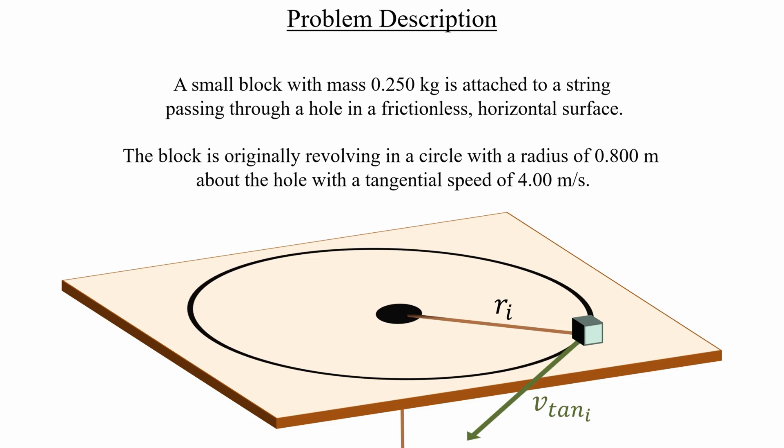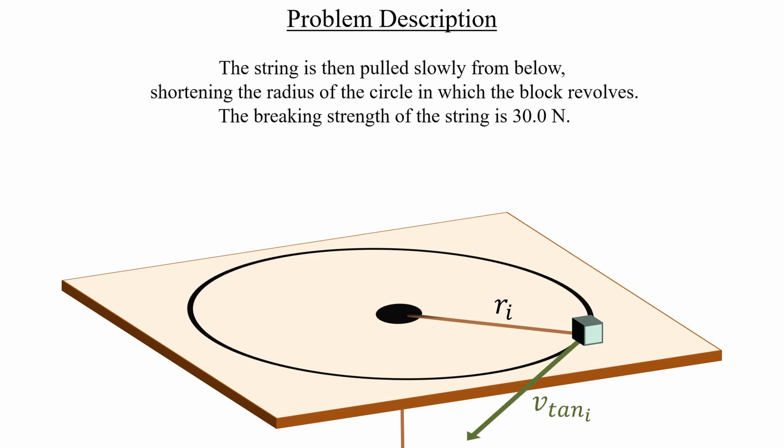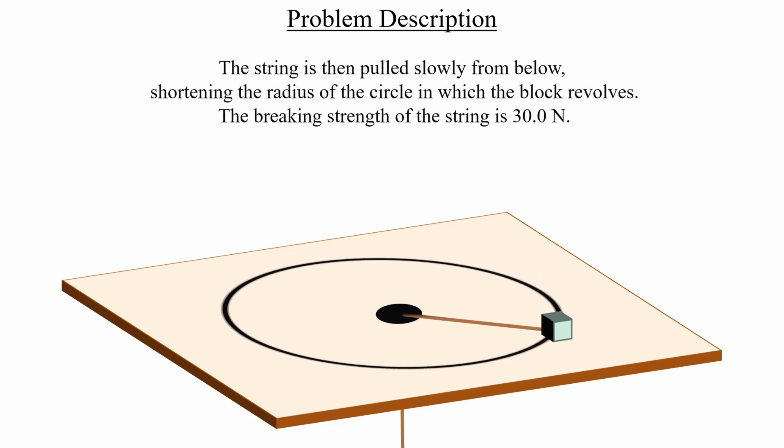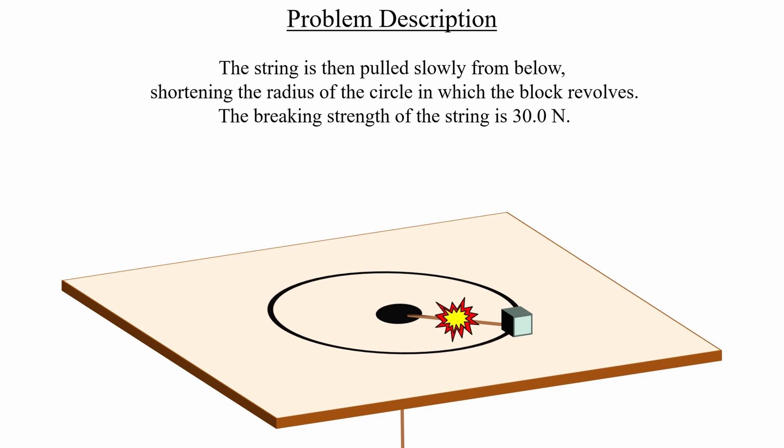Now, imagine that we pull on this string very slowly from below. This will cause the radius to gradually shrink, and the block is still moving in a circle the entire time. If we keep pulling, then eventually we're going to exceed the breaking tension of the string and cause it to snap. The question is, what's the final radius of the circle when that happens?